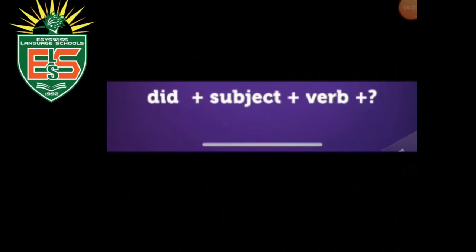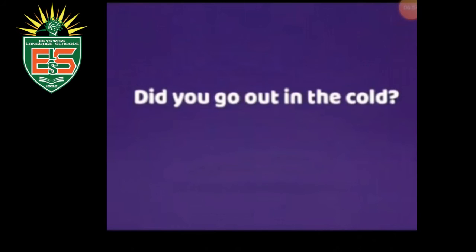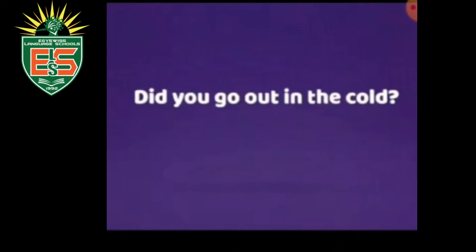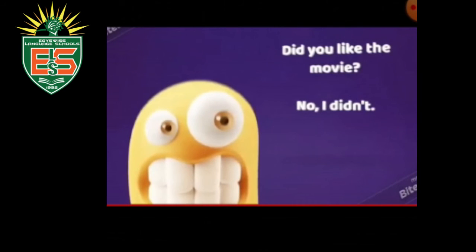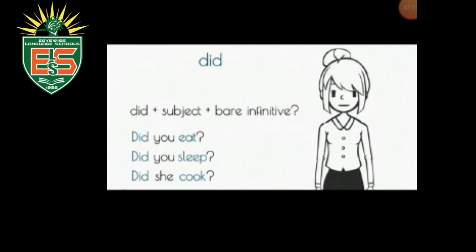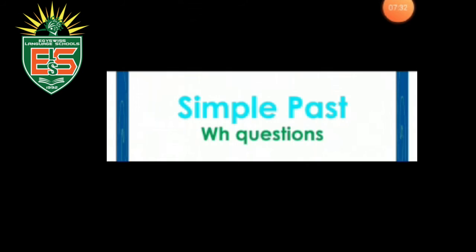To make yes/no questions, start with 'did' plus the subject plus the verb in the infinitive. For example: 'Did you go out in the cold?' — 'did' at the beginning, then subject 'you', then the base verb 'go'. Answers: 'Yes, I did' or 'No, I didn't'. Another example: 'Did you like the movie?' — 'No, I didn't.' The structure is: did + subject + bare infinitive.